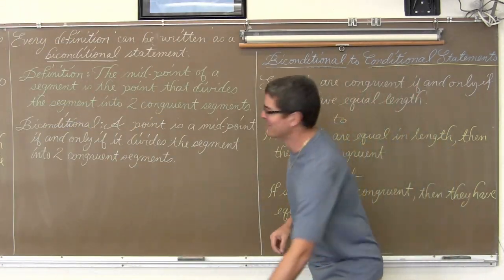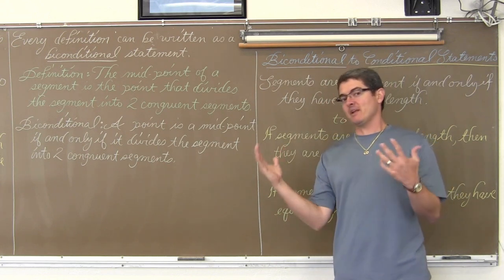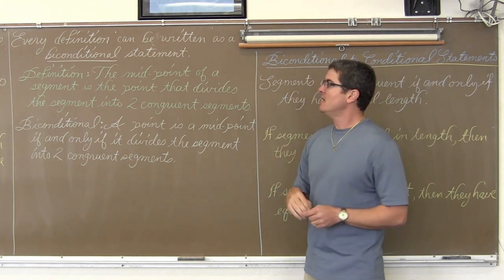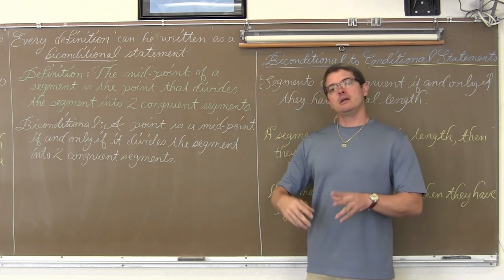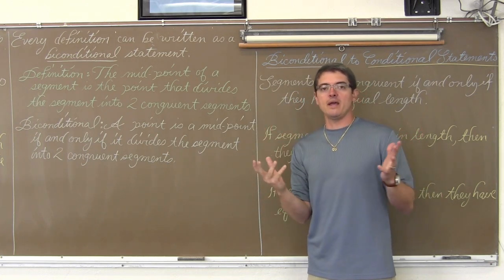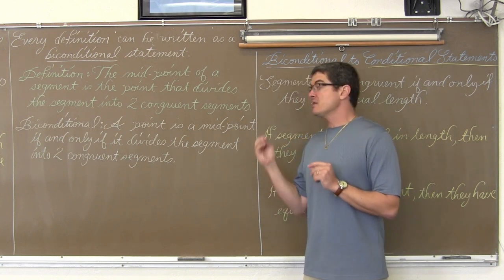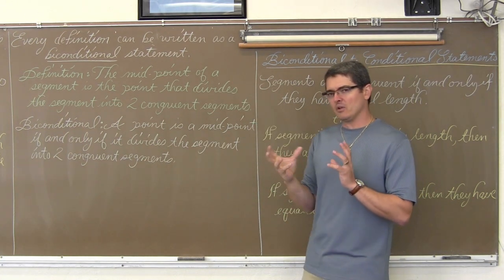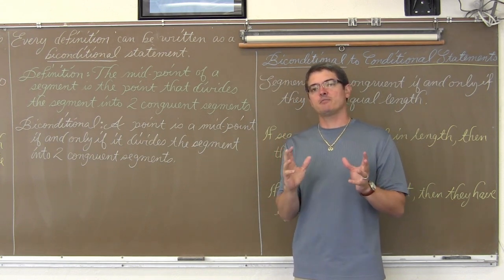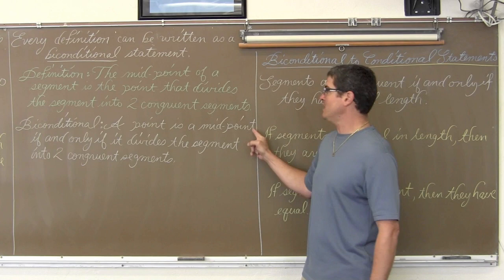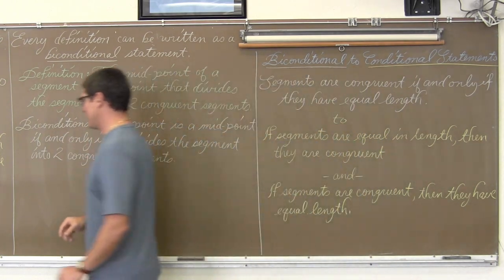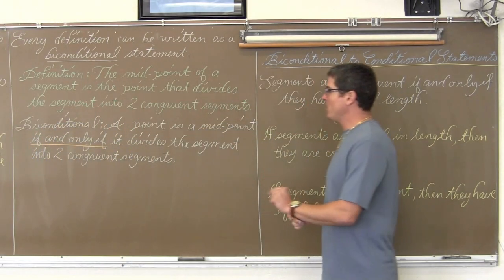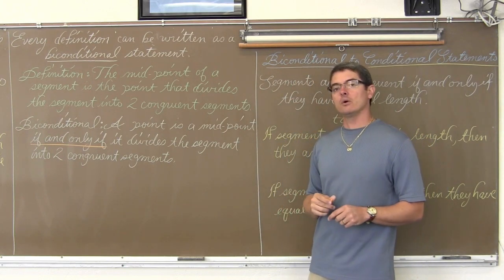BAM! Alright, wake you back up again. Every definition can be written as a biconditional statement. Our definition here is: the midpoint of a segment is the point that divides the segment into two congruent segments. Remember, congruent means equal in all ways — equal shape, equal size — and with segments that means their lengths are equal. A biconditional statement of this definition is: a point is a midpoint if and only if it divides the segment into two congruent segments.